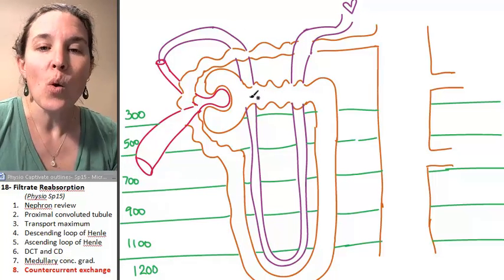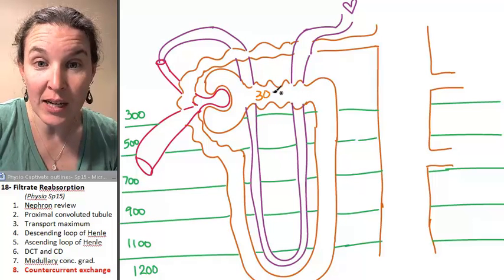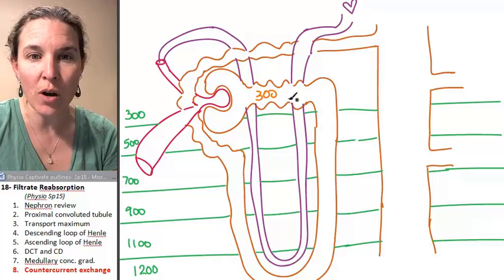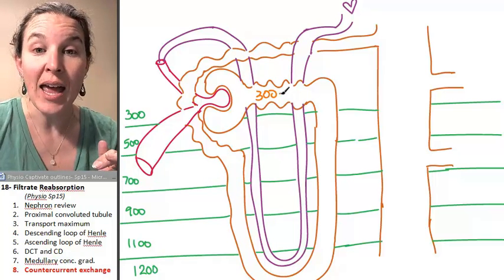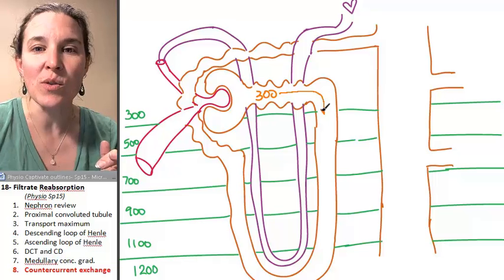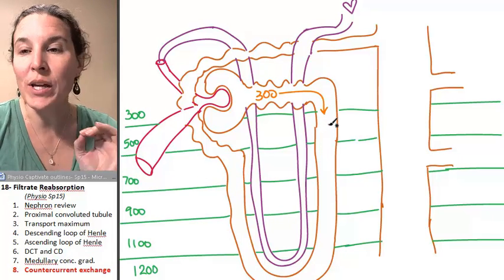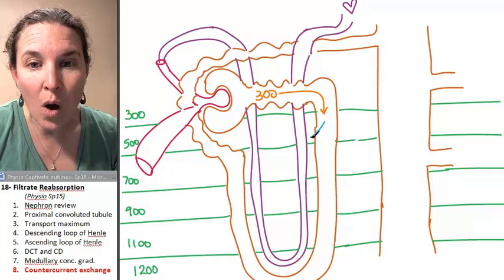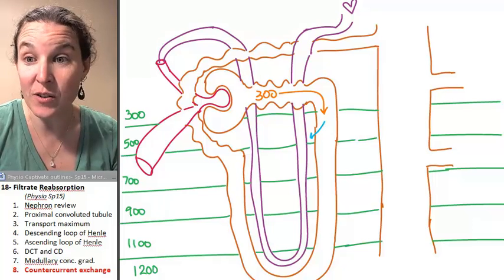So watch. We know that the filtrate is coming in at 300 milliosmoles. And you can see that I'm back to our original drawing. I've got the fluid in the proximal convoluted tubule and it heads down into the descending loop of Henle. As it heads down, we know in the descending loop of Henle, we're going to send water out.